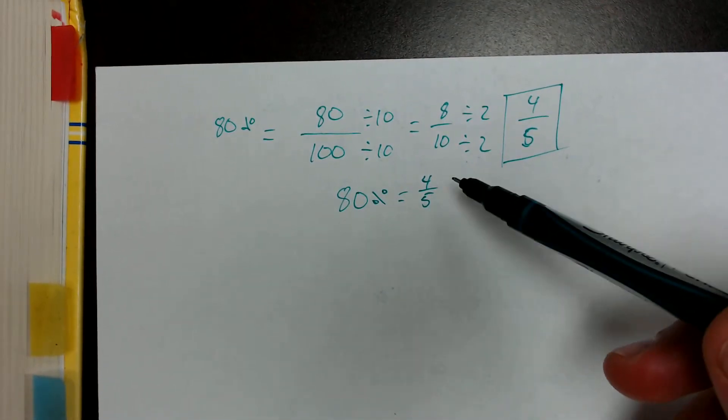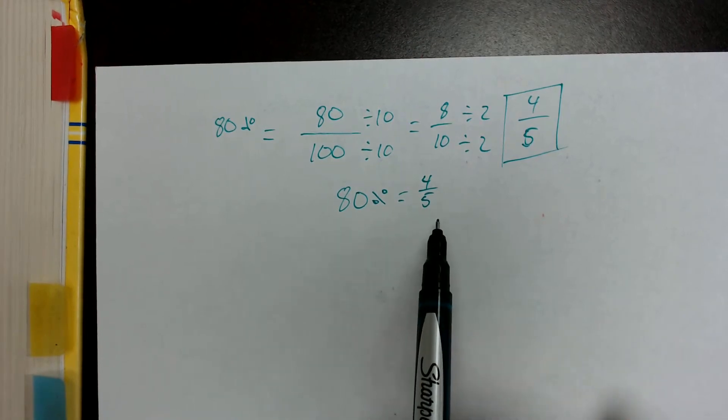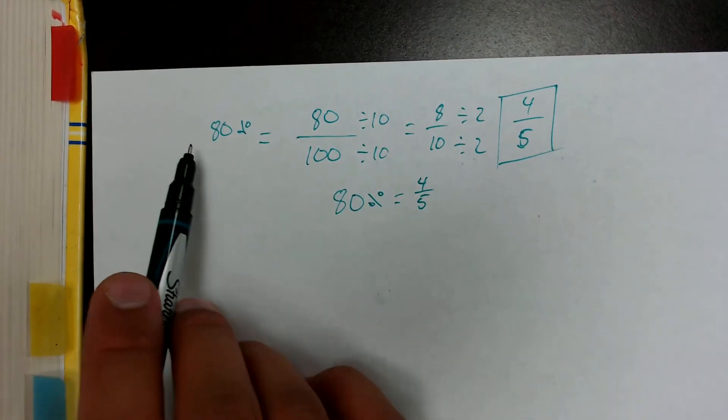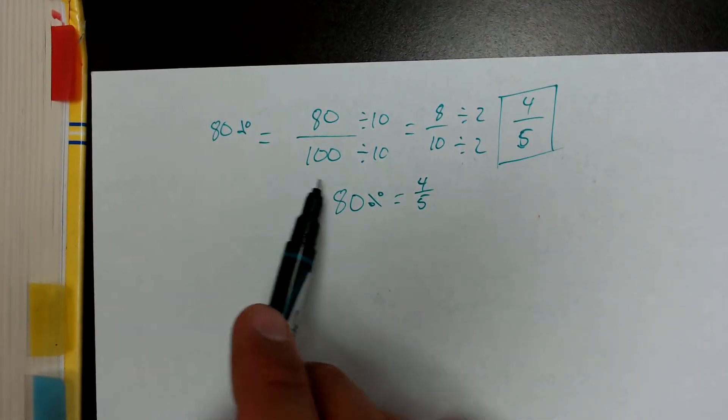And eventually, we'll learn how to turn fractions into percents, and you'll see how we can take the fraction 4 fifths and turn it into 80%. It's very cool. And that's the whole method right there. You just take the percent, put it over 100, and reduce.